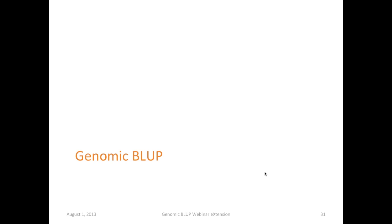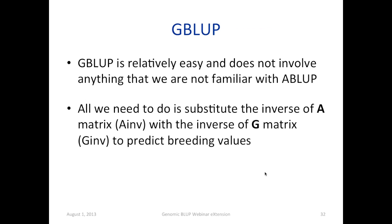Genomic BLUP. As we will see, genomic BLUP is relatively easy and does not involve anything we are not already familiar with. It's very easy to implement. All we need to do is replace the inverse of the A matrix derived from pedigrees with the inverse of the G matrix derived from markers to predict breeding values. That's all.